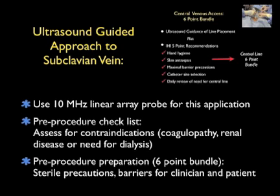Note that in some of the upcoming pictures we don't have a sterile sheath over the probe, but in a real procedure we'd want to ensure that sterile sheath is in place. We'll also want to run through a pre-procedure checklist assessing for relative contraindications to axillary vein cannulation. As it's a relatively non-compressible vessel, coagulopathy is a contraindication. Renal disease or need for dialysis would also be relative contraindications. We can also run through a more extensive checklist known as the six-point bundle, which emphasizes the use of maximal sterile precautions for both patient and clinician during the procedure.